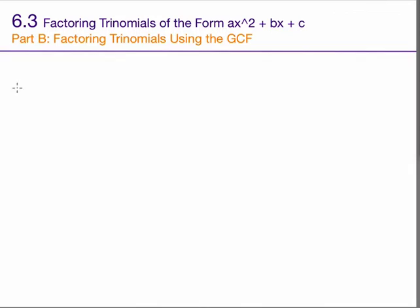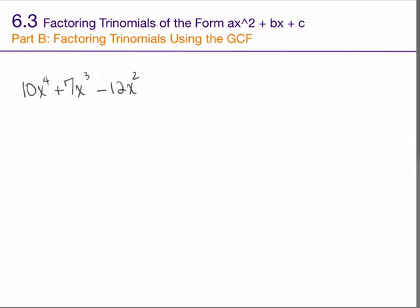This is question number 42 from your textbook: 10x to the fourth plus 7x cubed minus 12x squared. What do all three of these terms have in common? At first glance it may appear as though they don't — nothing goes into 10 and 7 and 12 except 1. But look at the variables: I have 4 copies here, 3 here, and 2 here. So I have at least 2 copies of x in each term. There's no number part to my greatest common factor, so all the number pieces are part of what's left over.